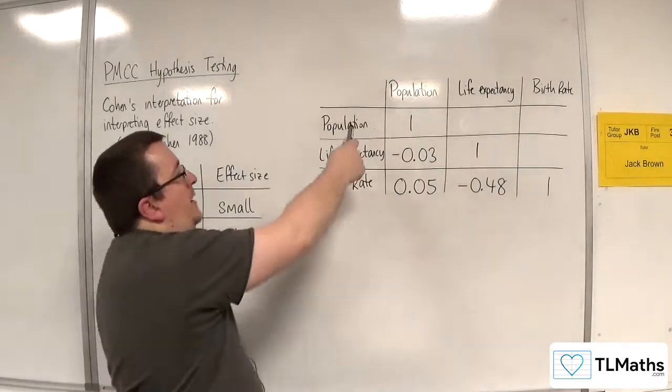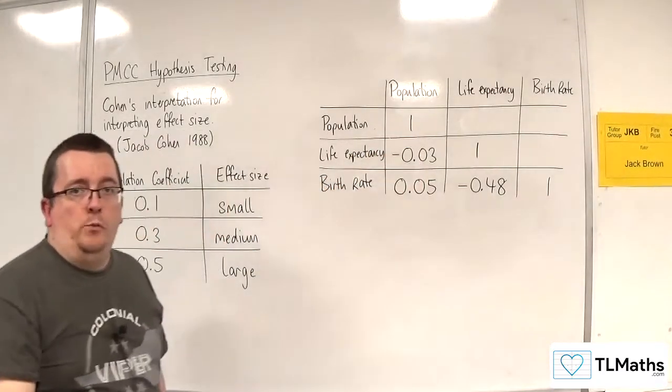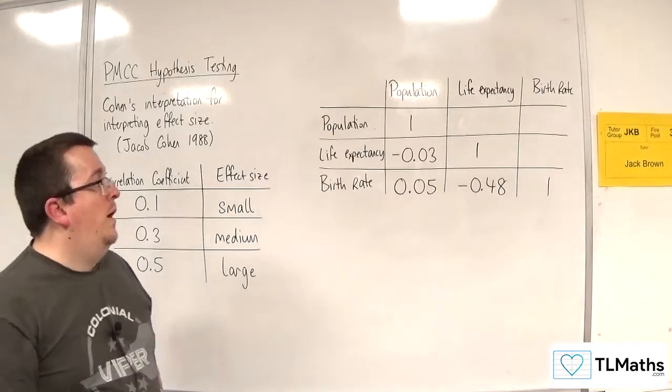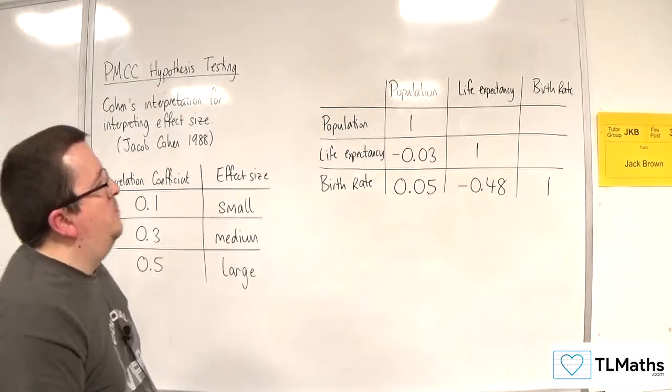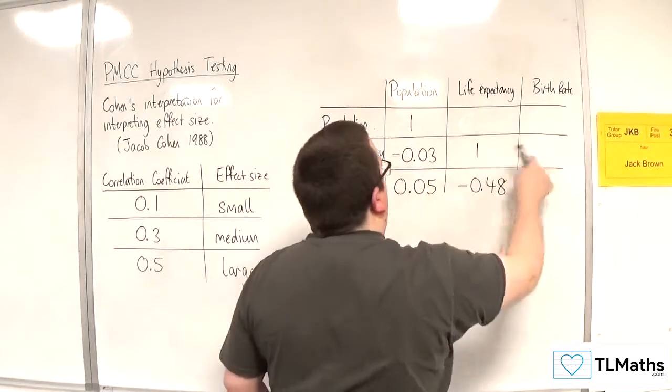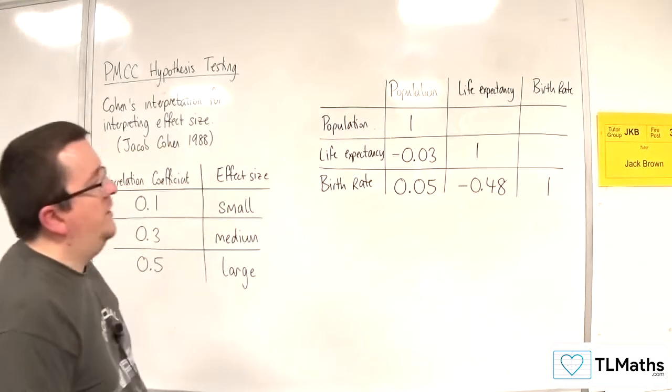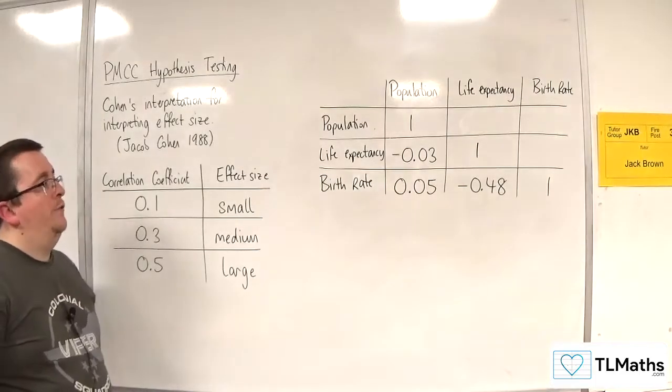Now then the population against population would clearly be just 1 to 1, so the PMCC would be 1, hence that's why they are 1, so you can ignore that column. And there's no point repeating the information here when it's already here, so that's why their table isn't quite filled.